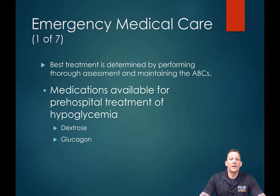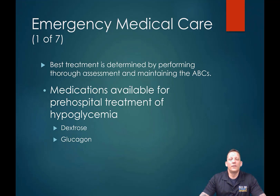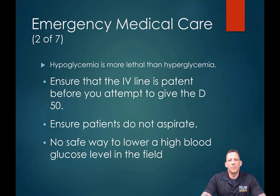If you ask the liver to dump the last bit of glucose it has, you have to get the patient to a point where they can either eat something with high sugar levels immediately, or you'll eventually be able to get that IV or IO access. Hypoglycemia is obviously more lethal than hyperglycemia.